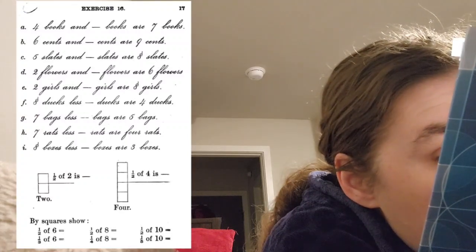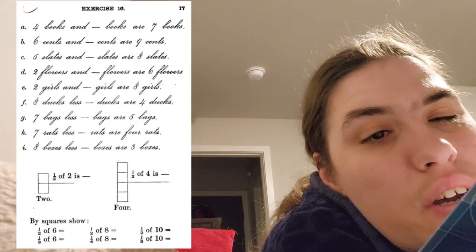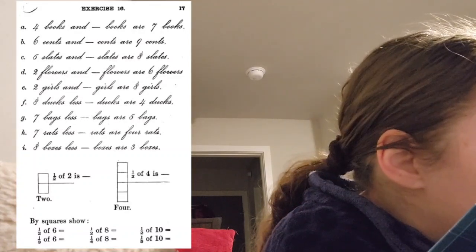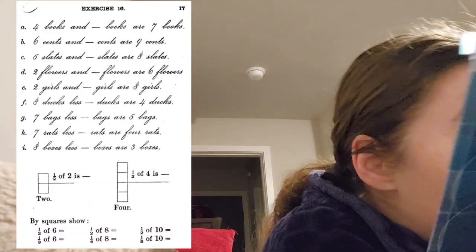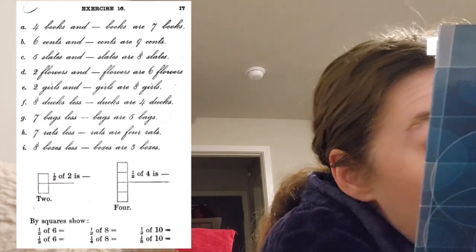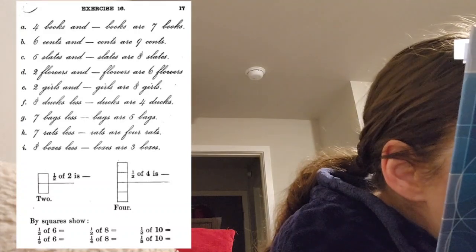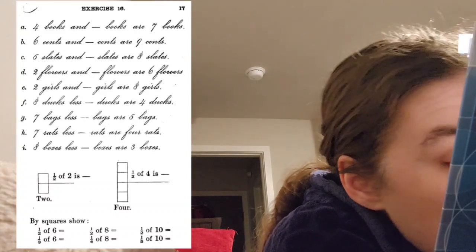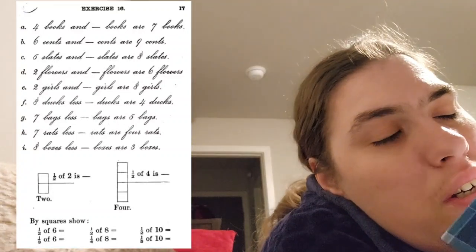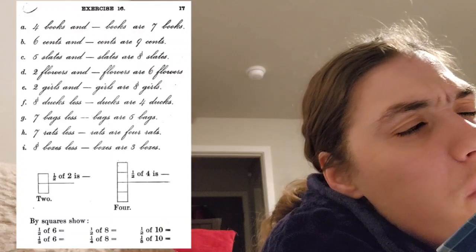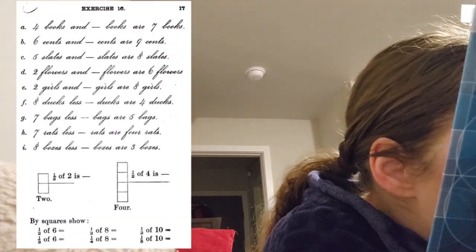Two girls and blank girls are eight girls. Two girls and six girls are eight girls. I think I'm still sleepy. My brain isn't really there. Eight ducks less blank ducks are four ducks. Eight ducks less two ducks are four ducks.